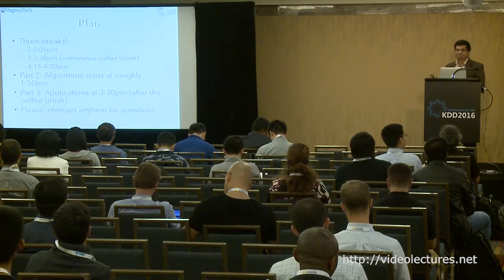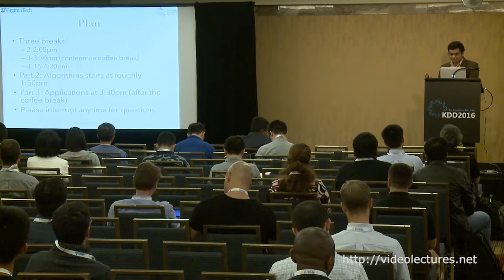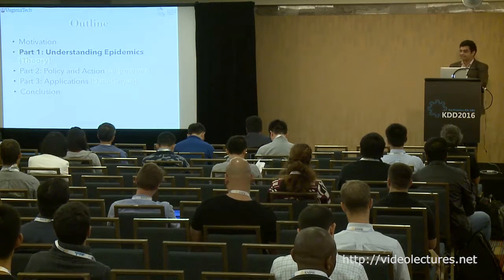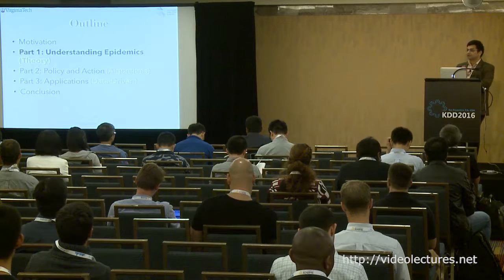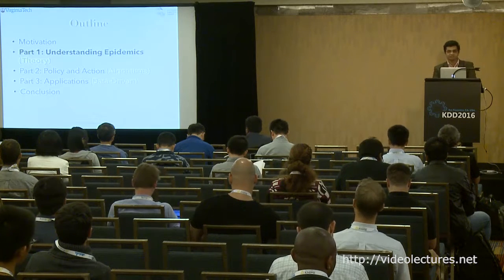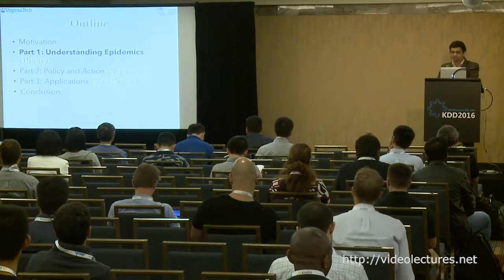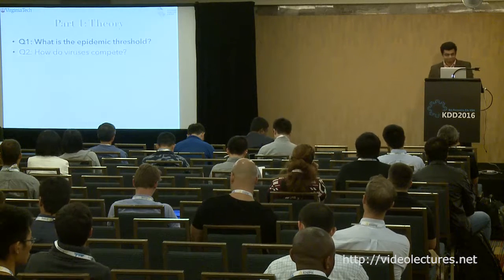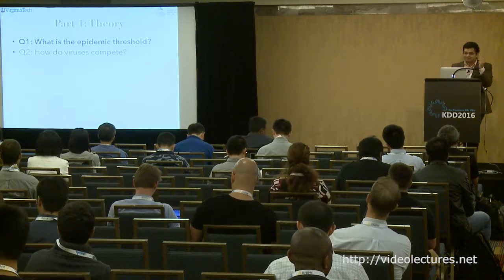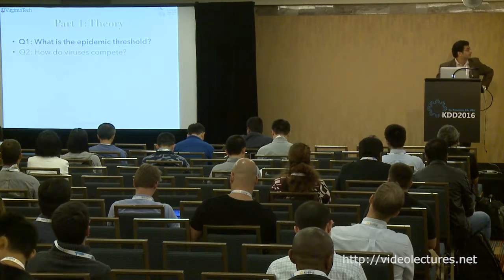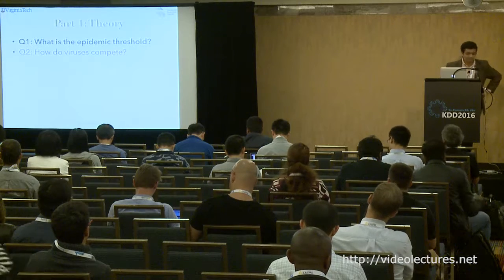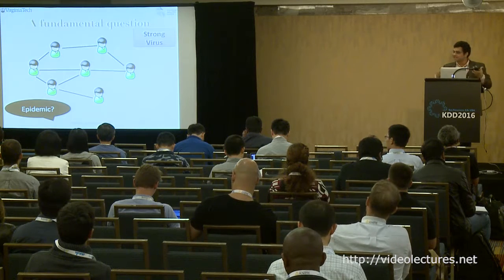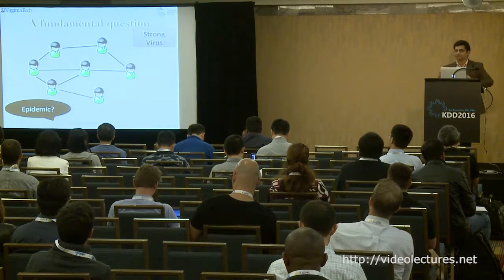Let's start with the first part: understanding epidemics — fundamental models and characterizations on networks. We'll focus on two main questions. The first is: what is the epidemic threshold? This is a very natural fundamental question. Suppose you have a graph and a virulent virus — a large portion of the graph gets infected quickly, so there is an epidemic. But suppose the same graph has a weak virus — the disease might infect one more person and die out, with no epidemic.